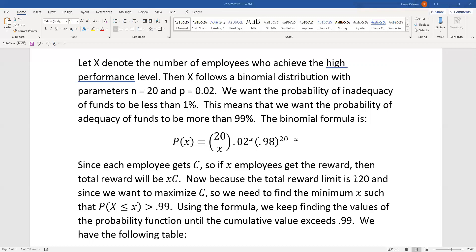We want to see what is that cumulative probability where we exceed 99%, which means that we have more than 99% chance of that many employees getting the reward. We want the minimum X because we want to minimize our X to maximize C, but we also have this condition: the cumulative probability needs to be greater than 0.99.